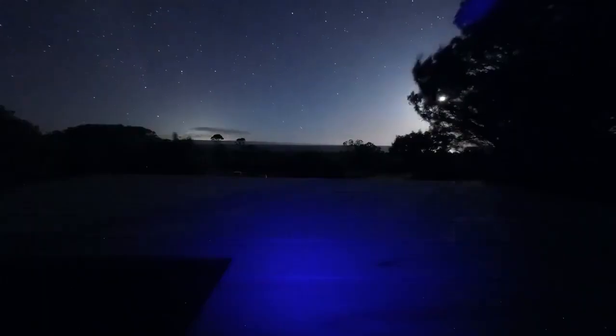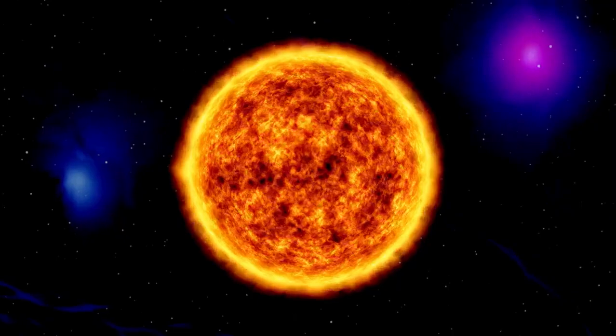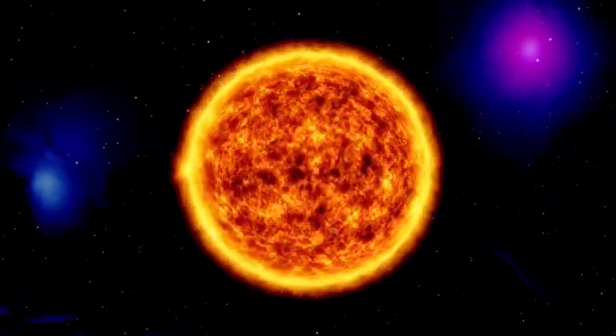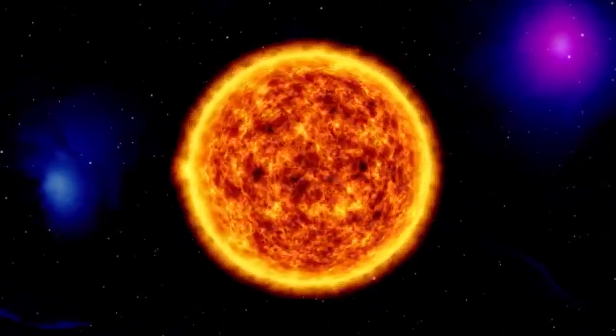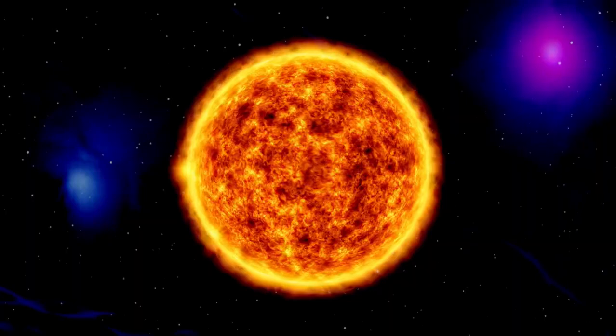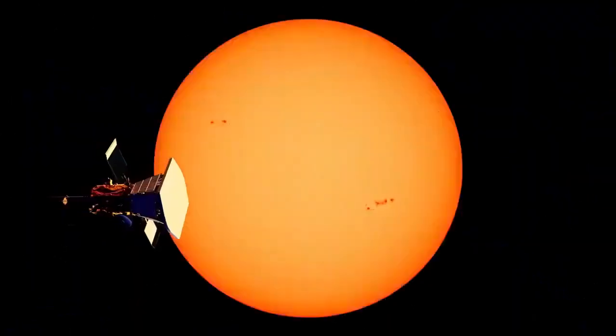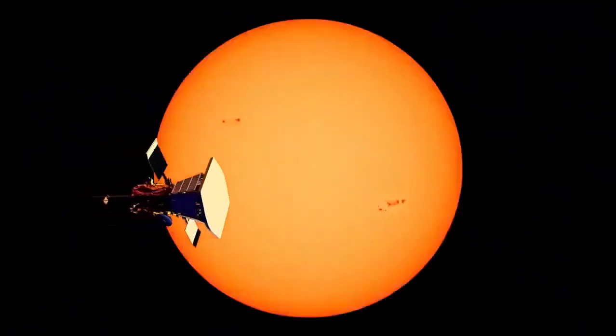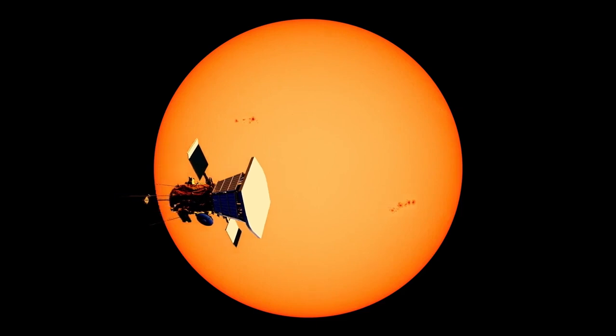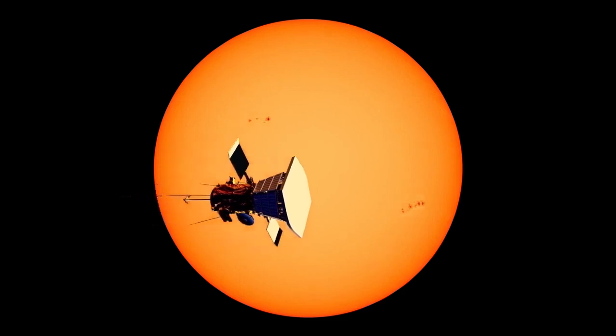Betelgeuse, located more than 640 light-years away from Earth, is a star of staggering proportions that dwarfs our sun in size. Its colossal nature and striking red hue make it a remarkable celestial object, captivating observers for generations. Even at the speed of light, it would take over 640 years to reach Betelgeuse, a journey far beyond the capabilities of current technology.